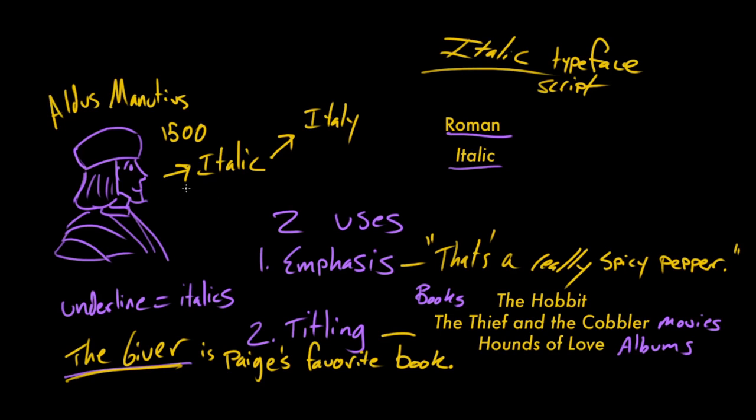That's right. So that's where the italic typeface comes from. Is this guy Aldus Manutius. This is how we use it today. You can learn anything. David out. Paige out.